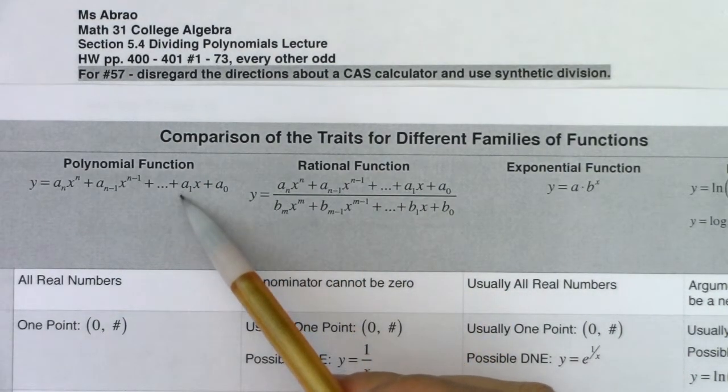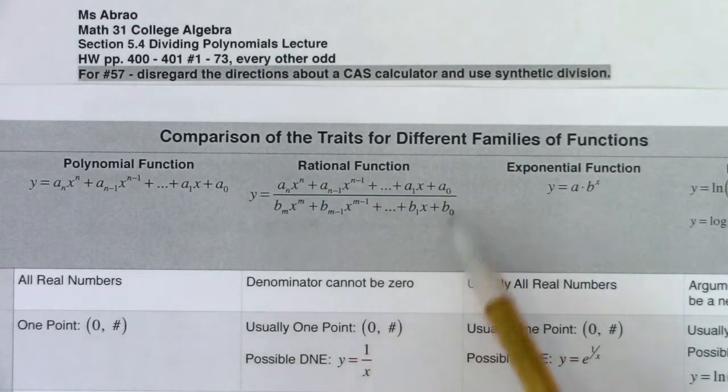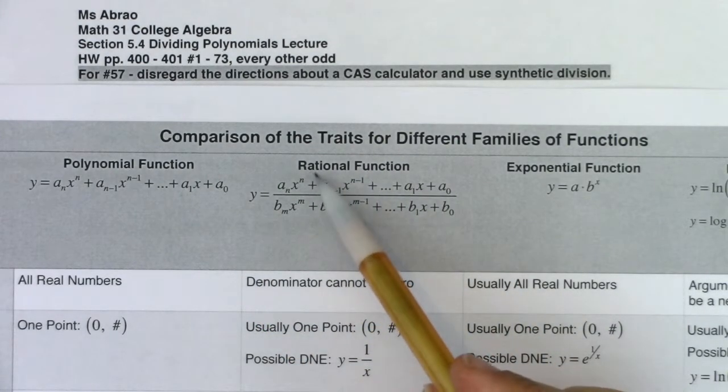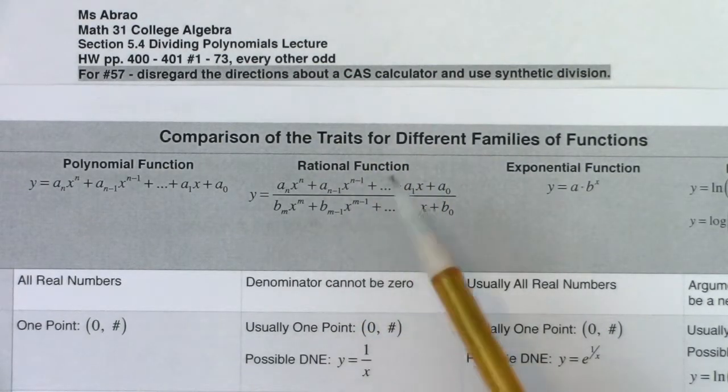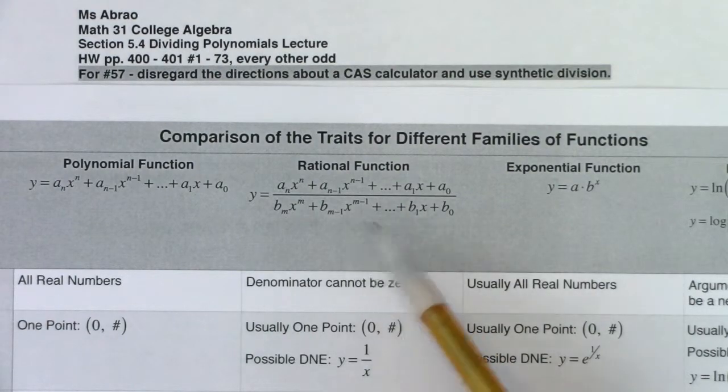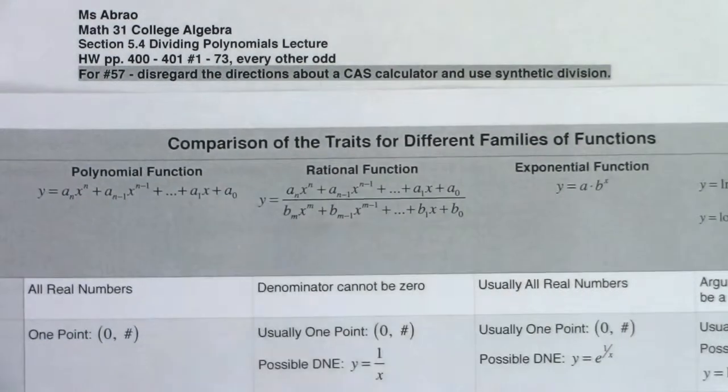We just left polynomials behind. We should be comfortable enough with graphing a polynomial, and we're going to start looking at rational functions. And when you talk about rational functions, we are dividing polynomials. So we want to talk about how to divide polynomials leading up to us being able to graph rational functions.